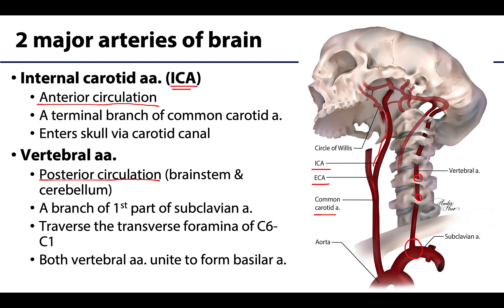The vertebral artery enters the skull via the foramen magnum, giving off some branches in that area. Near the junction of the pons and medulla, the two vertebral arteries join to form the basilar artery. For this reason, the more posterior circulation is often referred to as the vertebrobasilar system.